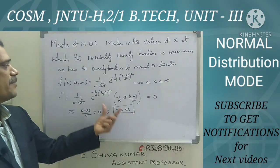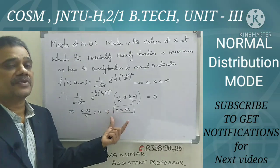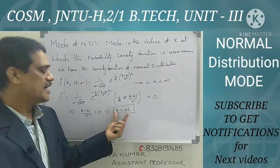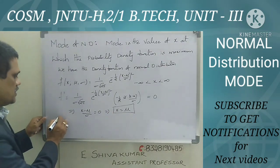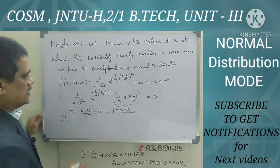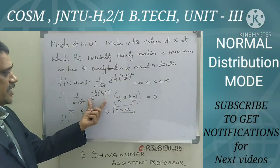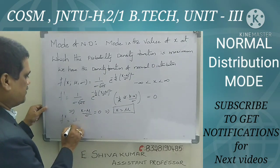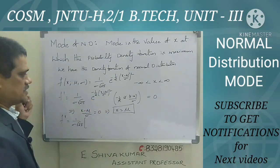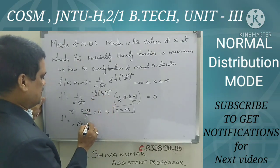At x = μ we have a critical point, but we don't yet know if it is a maximum or minimum. To investigate, we use the second derivative test. I will now find f''(x). The constant 1/(σ√(2π)) stays, and I apply the uv (product) rule to differentiate the remaining expression.